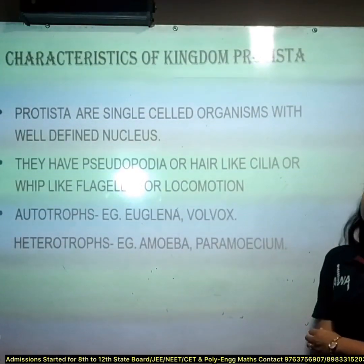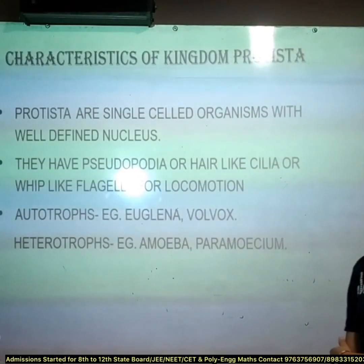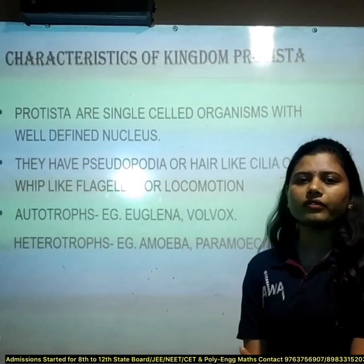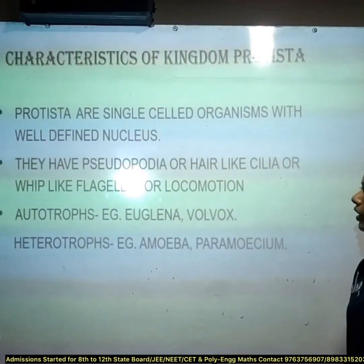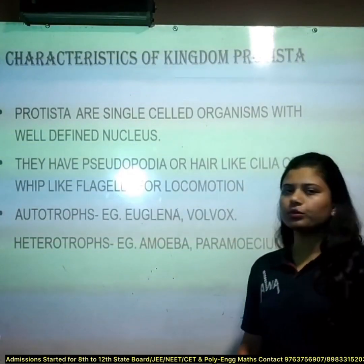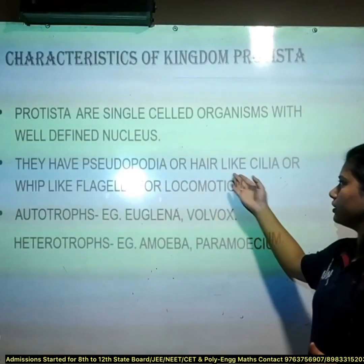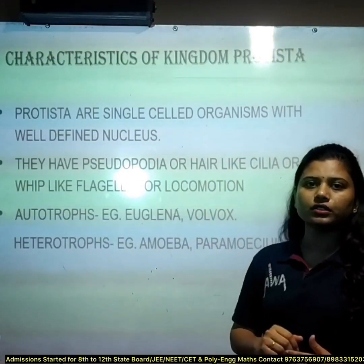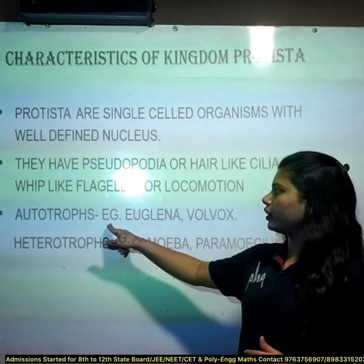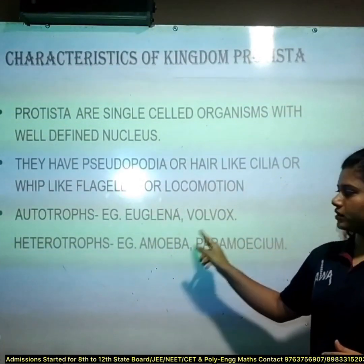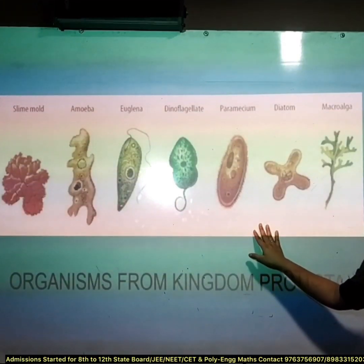The characteristics of Kingdom Protista: Protista are single-celled organisms with a well-defined nucleus. They have pseudopodia, or hair-like cilia, or whip-like flagella for locomotion — to move from one place to another. They are autotrophs and heterotrophs. Examples of autotrophs are Euglena and Volvox; heterotrophs include Amoeba and Paramecium.